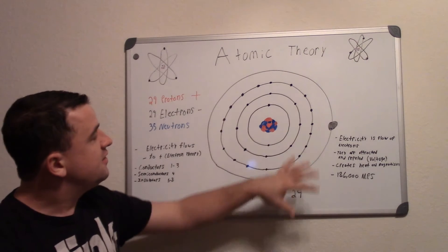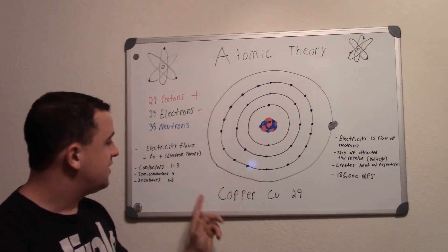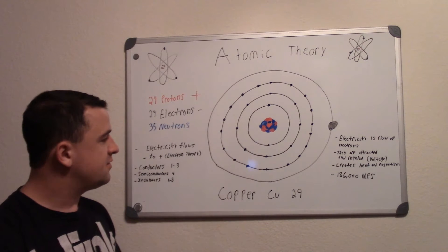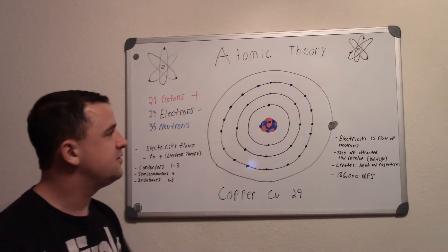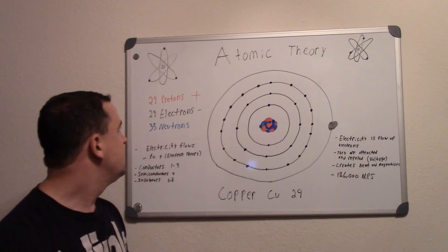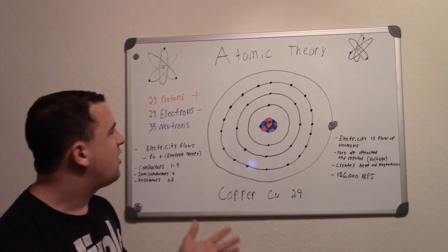So this right here is basically a picture of the copper atom. It's copper, its initials are Cu, its atomic number is 29. And so what are atoms?